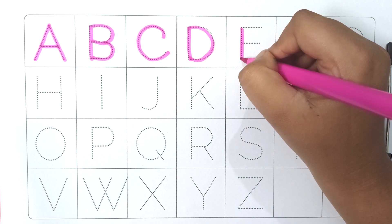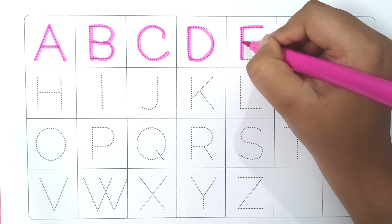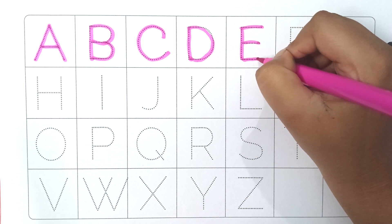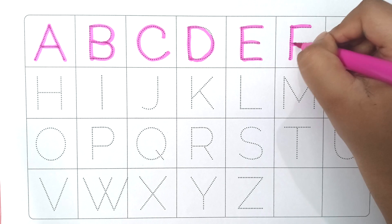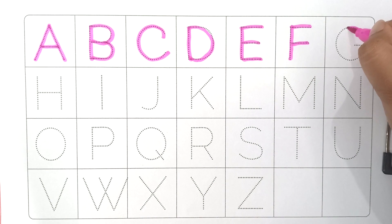E, E for eat. F, F for farm. G, G for goal.